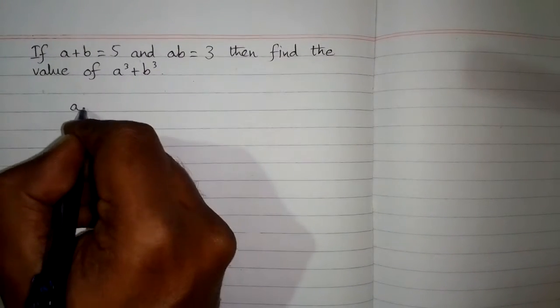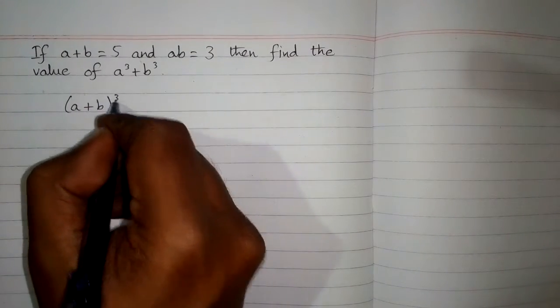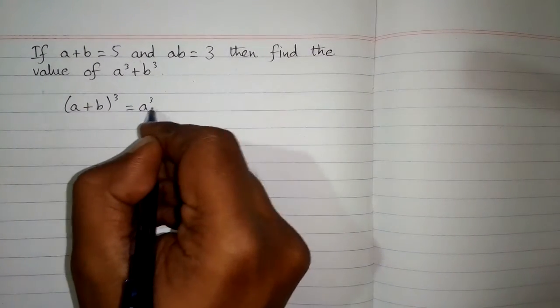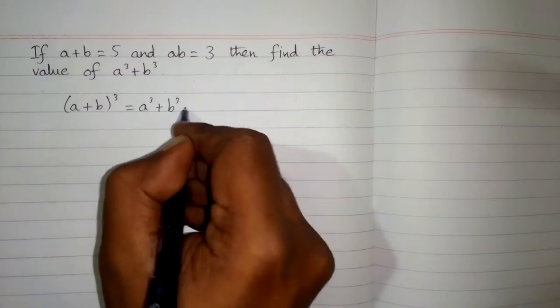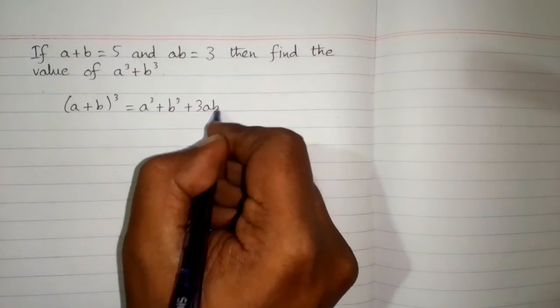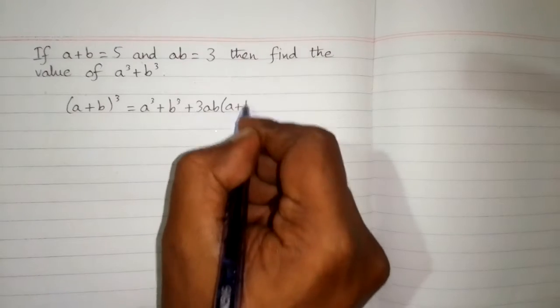So we use algebraic identity: a plus b whole cube is equal to a cube plus b cube plus 3ab multiplied by a plus b.